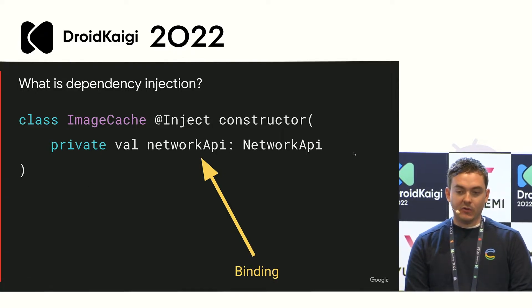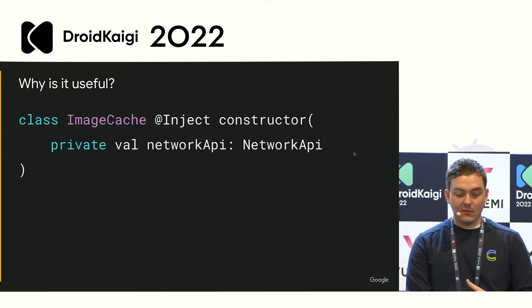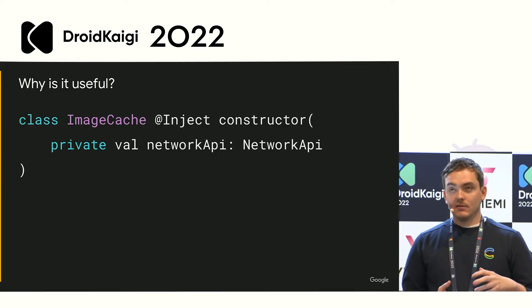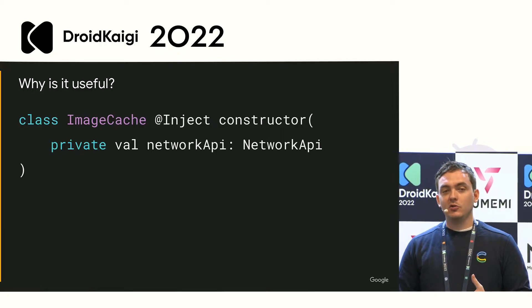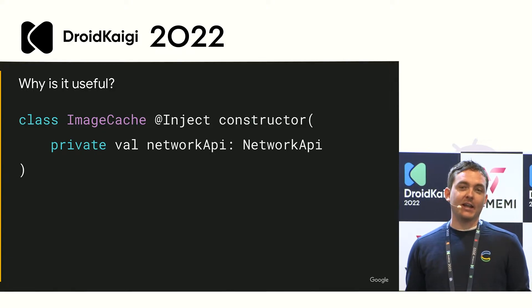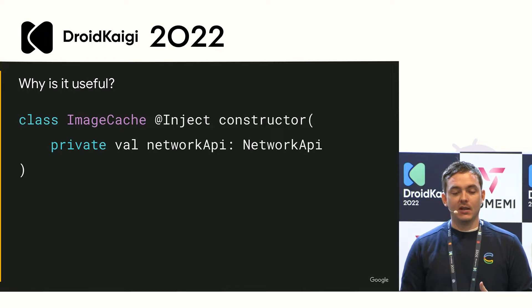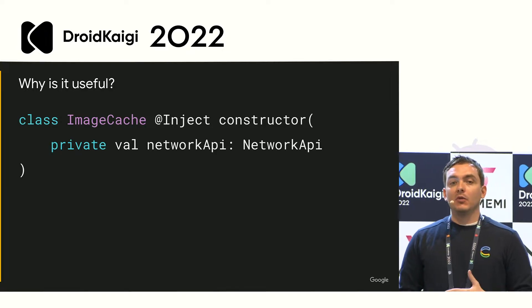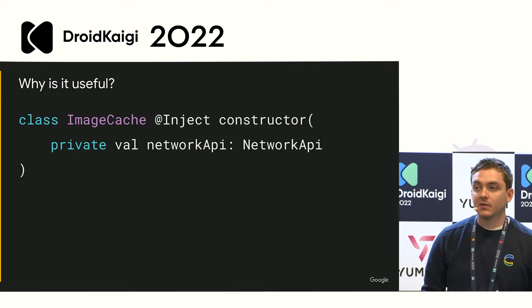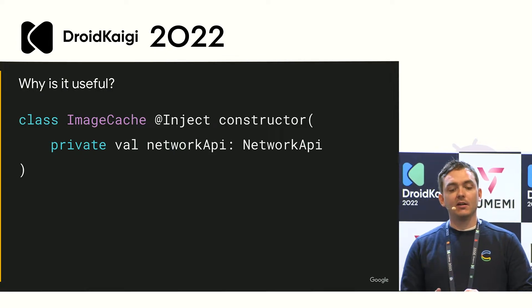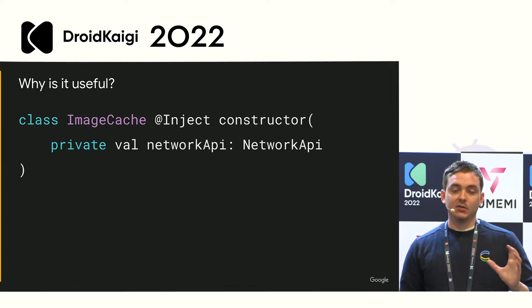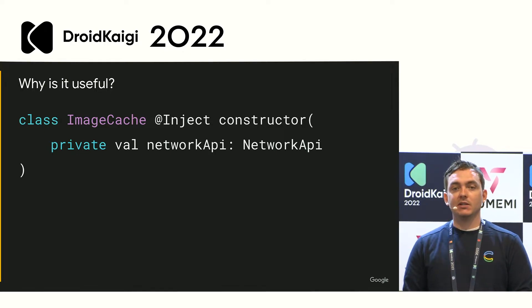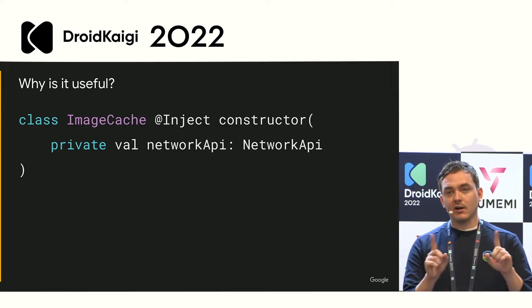In a fully fleshed-out app, dependency injection also handles the lifecycle of objects. If you had an image cache, you don't want multiple instances — it defeats the purpose of a cache. You want one instance, and dependency injection helps with that through scopes. Scopes tell Dagger how long to keep an object around. In this case, we'd probably use the singleton scope or application scope, which keeps one image cache for the entire lifecycle of the application.